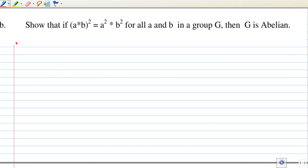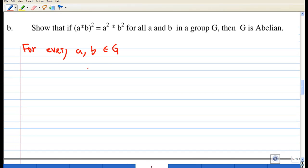So we start with for every a, b in G, we are given that (ab)² = a²b². Now (ab)² means ab times ab, whereas a² means a times a, and b² means b times b.